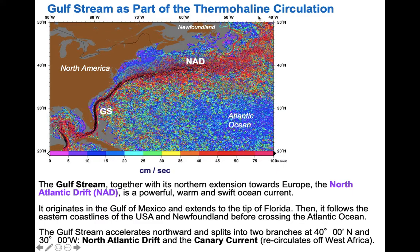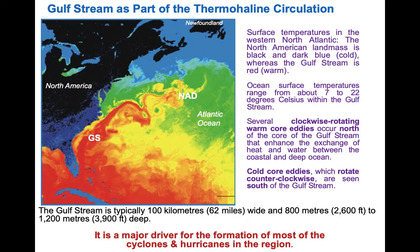The North Atlantic Drift splits into two — one arm goes to the Arctic Circle and the other goes towards the Canary Islands off West Africa. The surface temperatures in the Gulf Stream can range from 7 to 20 degrees Celsius — seawater over 20 degrees Celsius is pretty warm — which is why it carries so much heat energy all the way across the Atlantic Ocean.